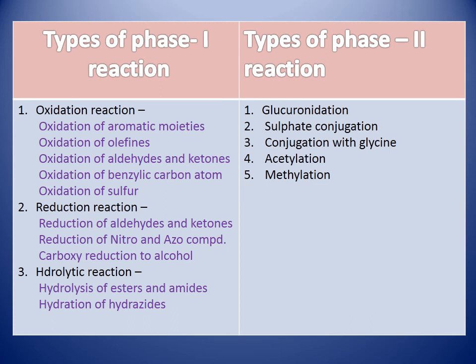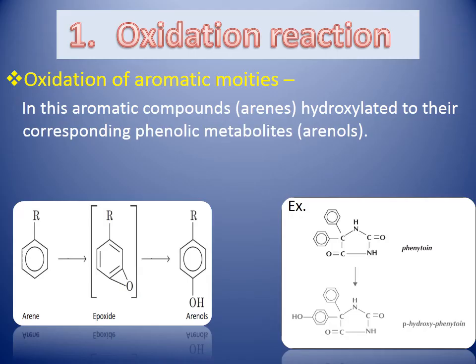Coming to the different classifications of phase 1 and phase 2 reactions: types of phase 1 reactions are oxidation, reduction, and hydrolytic reactions, with subclassifications also listed. Types of phase 2 reactions are glucuronidation, sulfate conjugation, conjugation with glycine, acetylation, methylation, etc.